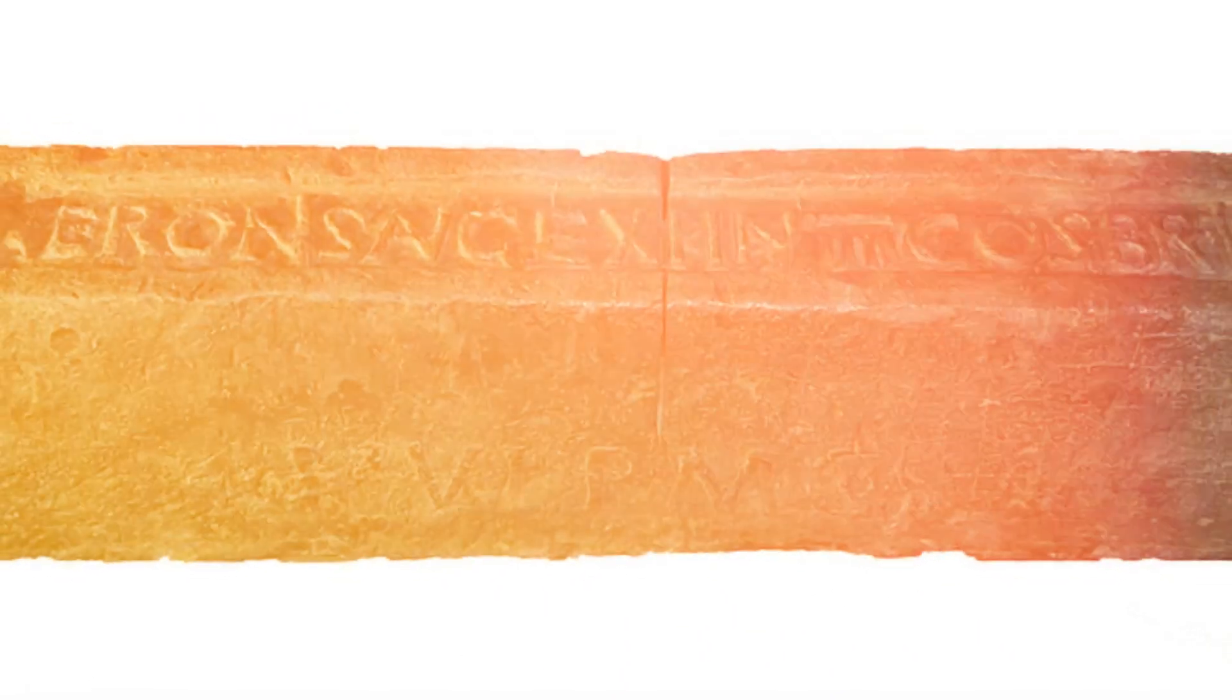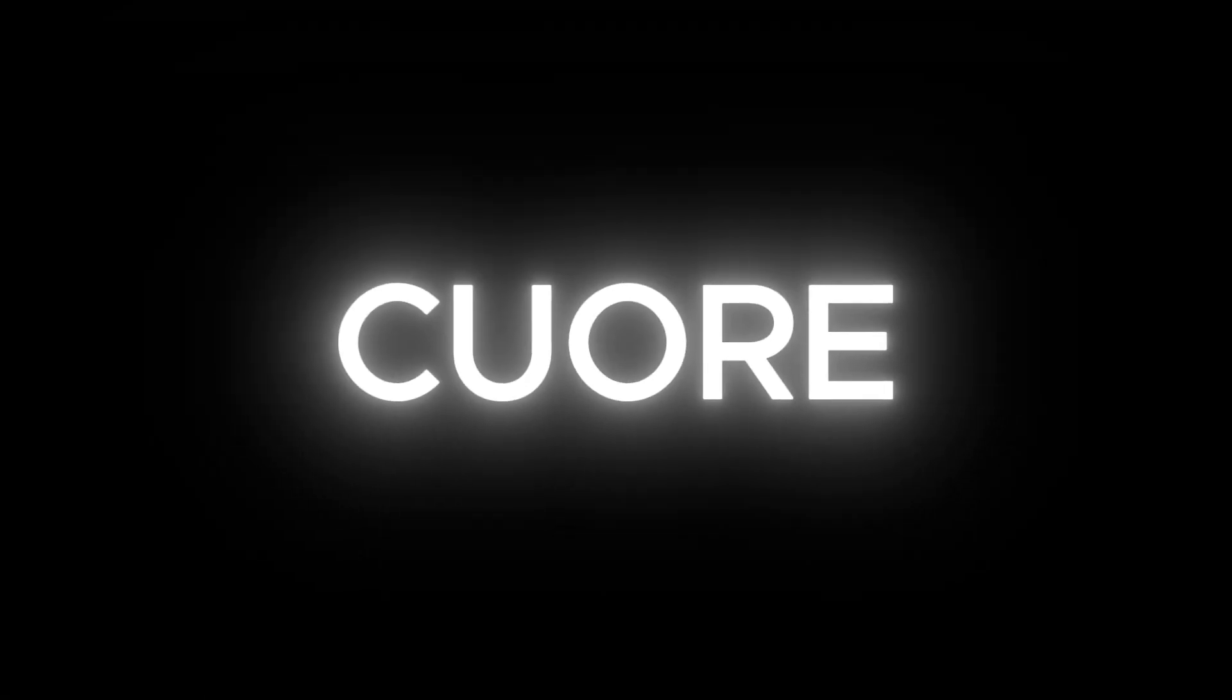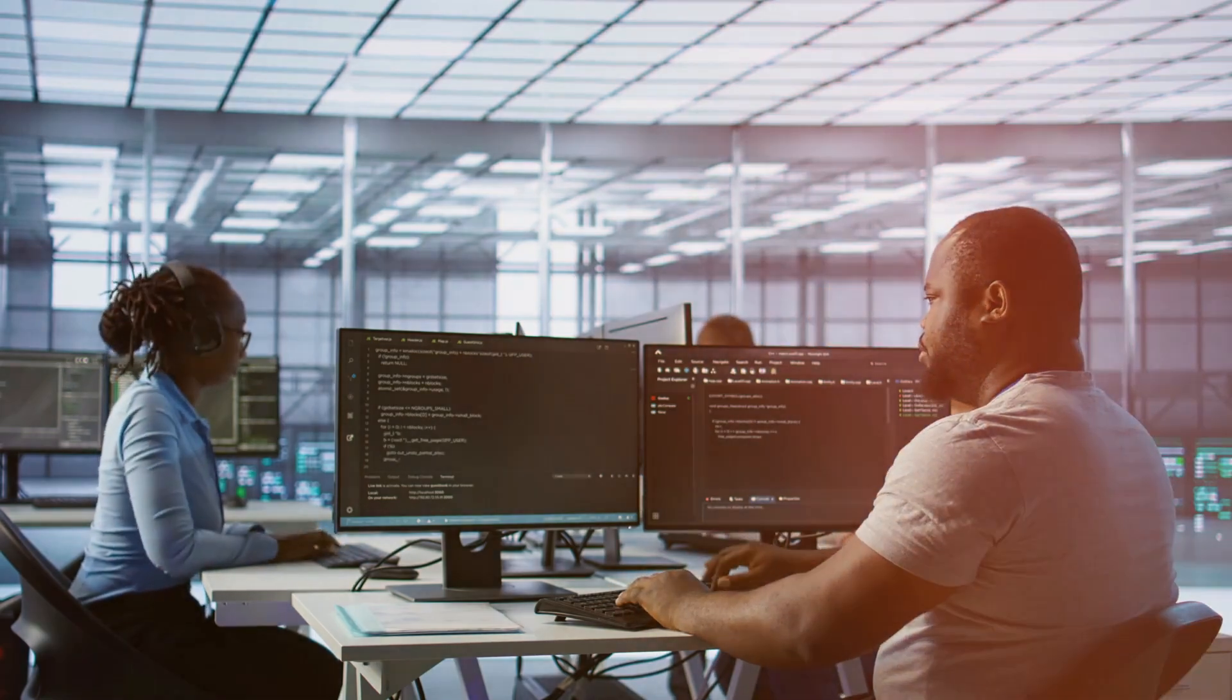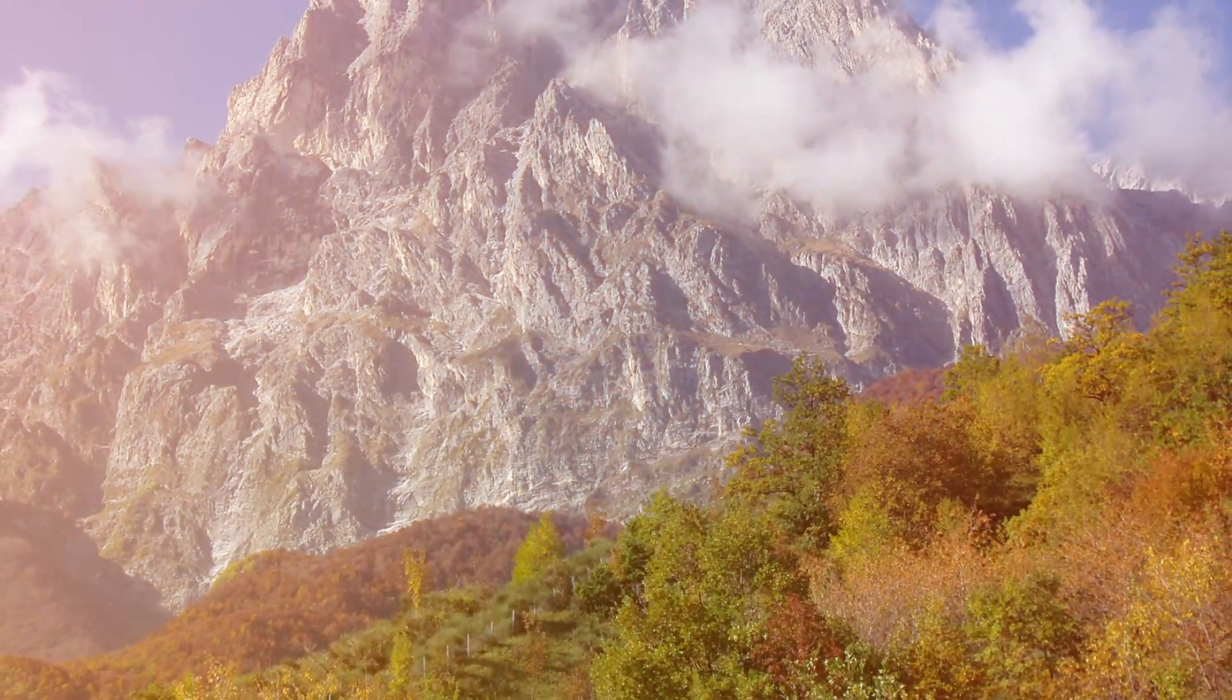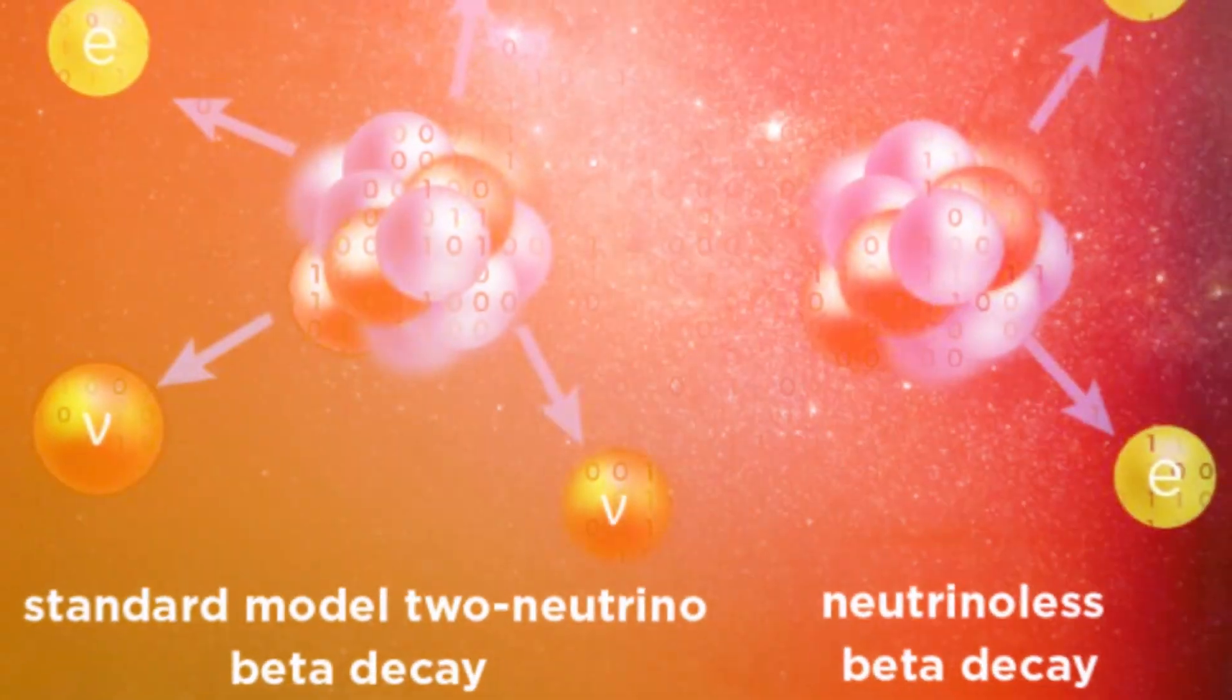Scientists used some of the ancient ingots in an experiment called CUOR, short for Cryogenic Underground Observatory for Rare Events. Located deep beneath the Apennine Mountains in Italy, CUOR was designed to detect an incredibly rare phenomenon called neutrino-less double beta decay.